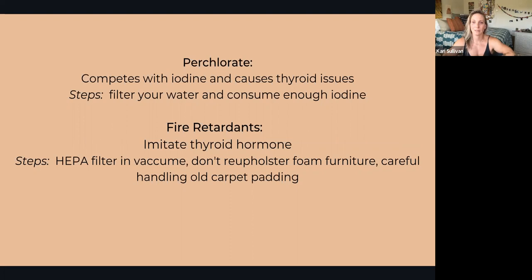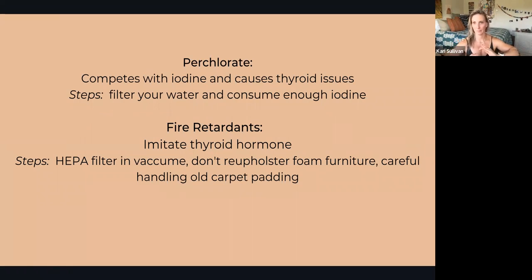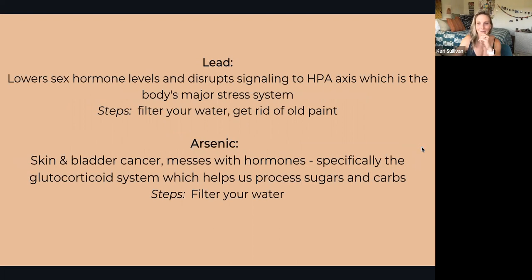Arsenic can cause skin and bladder cancer and messes with hormones, specifically the glucocorticoid system — which helps us process sugars and carbohydrates. If that's not working properly, problems include weight changes, protein wasting, sarcopenia (Dr. Gabrielle Lyon says we are a society of muscle wasting), suppressed immune system, osteoporosis, growth retardation, and increased blood pressure. Think of a society that eats mostly processed foods — mostly sugars and carbohydrates — and if that system isn't working, it's a serious problem.